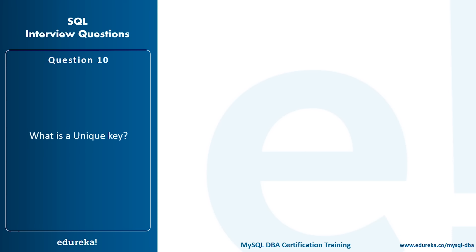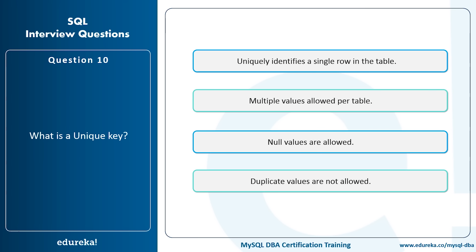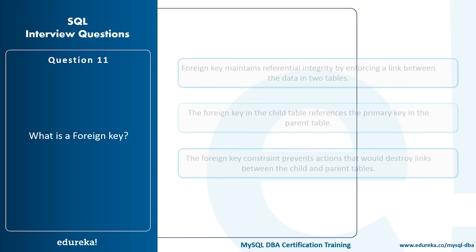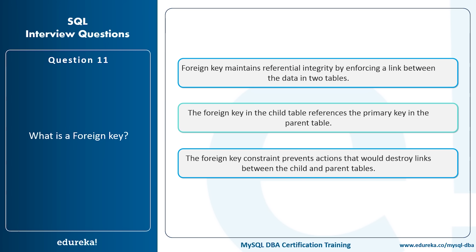What is the unique key? A unique key identifies a single row in a table. Multiple null values are allowed, but duplicate values are not allowed. What is the foreign key? A foreign key maintains referential integrity by enforcing a link between data in two tables. The foreign key in the child table references the primary key in the parent table, and the foreign key constraint prevents actions that would destroy the links between the child and parent tables.